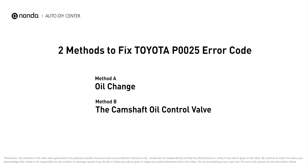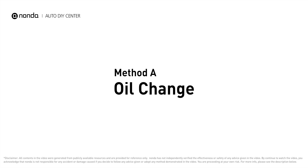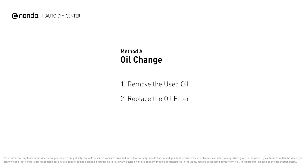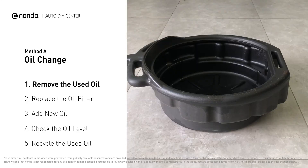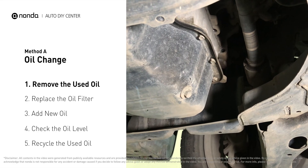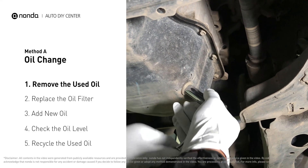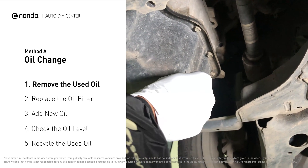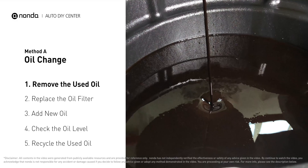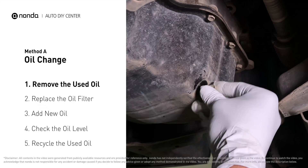Here are two of the most practical solutions to fix Toyota's P0025 error code. Method A: oil change. Locate the oil drain plug on your vehicle and place an oil collection pan underneath it. Use a socket ratchet to remove the plug from the oil pan. Once the plug is removed, the oil should start flowing out into your collection pan. Once all the oil is drained, replace the drain plug and tighten it back on.